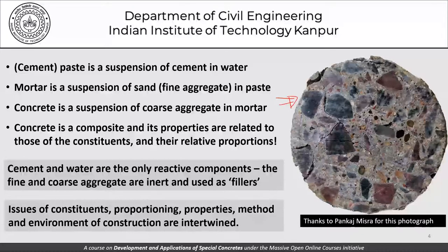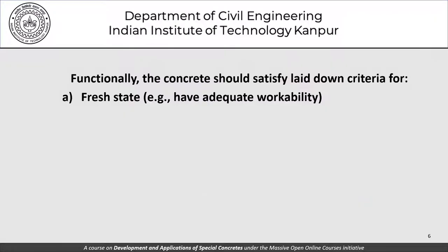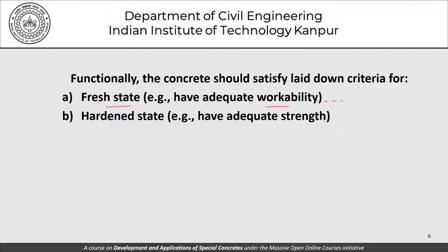I'd leave it to you to work out the densities of paste, mortar, and concrete based on specific gravities and volumetric contributions of constituent materials. Functionally, concrete should satisfy laid down criteria for the fresh state — it should have adequate workability — and in the hardened state it should have adequate strength and any other criteria that is laid down.